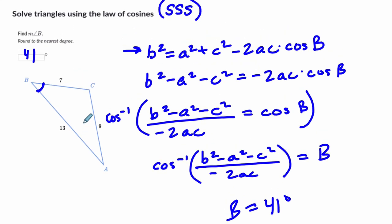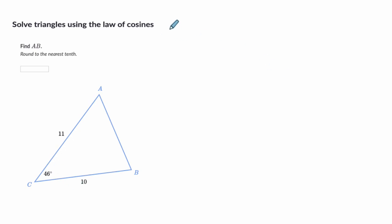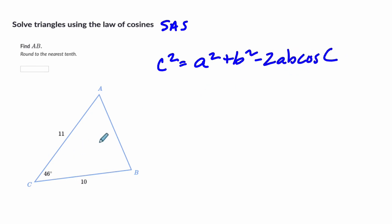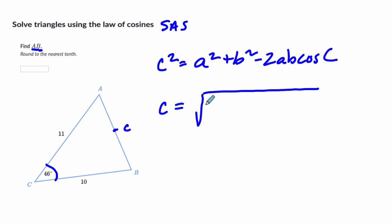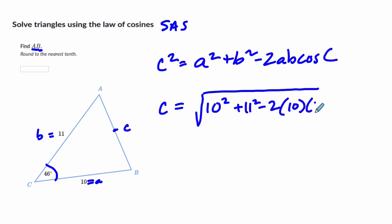Now we have another side-angle-side problem. They want to know what length AB equals, and I'm calling it C since it's across from angle C. So C squared equals A squared plus B squared minus 2AB times cosine of C, which gives us the square root of 10 squared plus 11 squared minus 2 times 10 times 11 times cosine of 46. You should get about 8.3 to the nearest tenth.